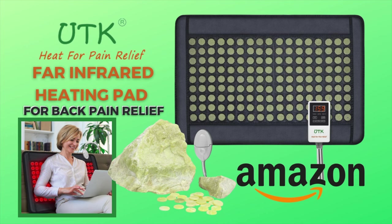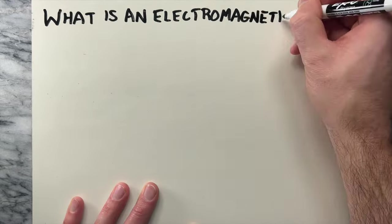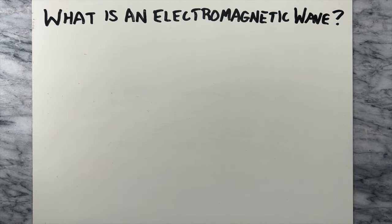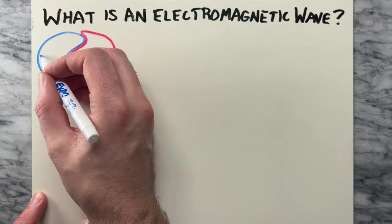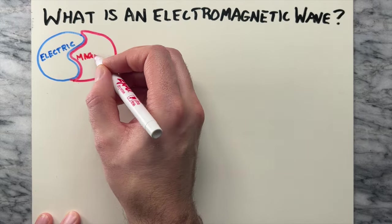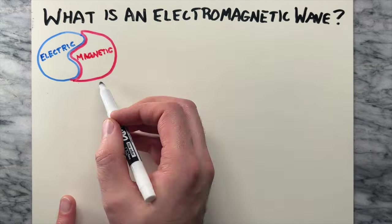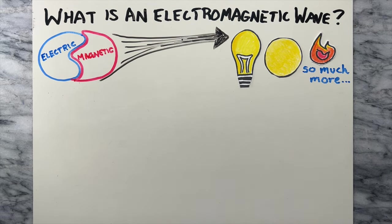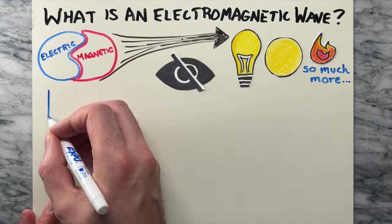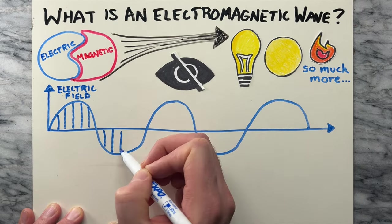So what exactly is an electromagnetic wave? Picture it like this: it's a dynamic duo of electric and magnetic parts working together to travel through space. It's the reason we have light, heat, and so much more. Electromagnetic waves are like invisible energy waves that consist of two parts working together — electric and magnetic fields.